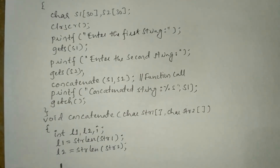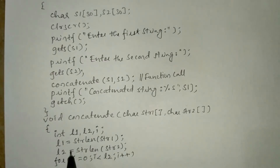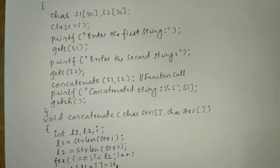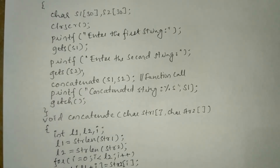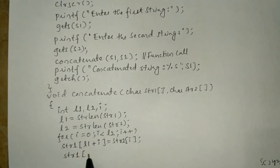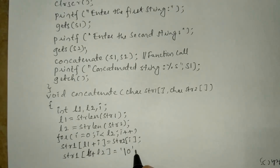After this, we need to iterate through the statements. I'll write: for(i = 0; i < l2; i++). Inside the loop we write str1[l1 + i] = str2[i]. After the loop, str1[l1 + l2] is equated with the null character — it should be enclosed within a single pair of quotation marks — and then the curly closing brace.